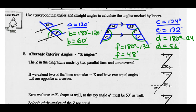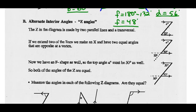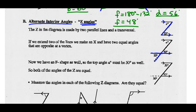We used the parallel line theorem with the F pattern and straight angles. Part B: alternate interior angles, or the Z pattern. The Z in the diagram is made by two parallel lines and a transversal. If we extend two of the lines, we make an X and we have two equal angles that are vertically opposite at the vertex. So vertically opposite angles are equal — they're both 50.